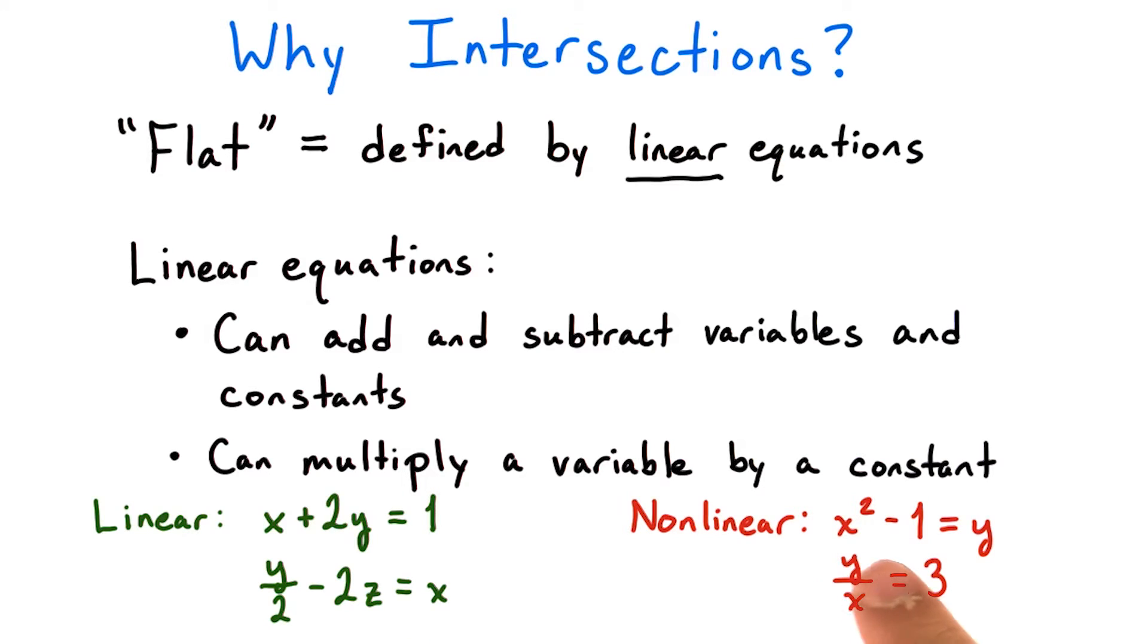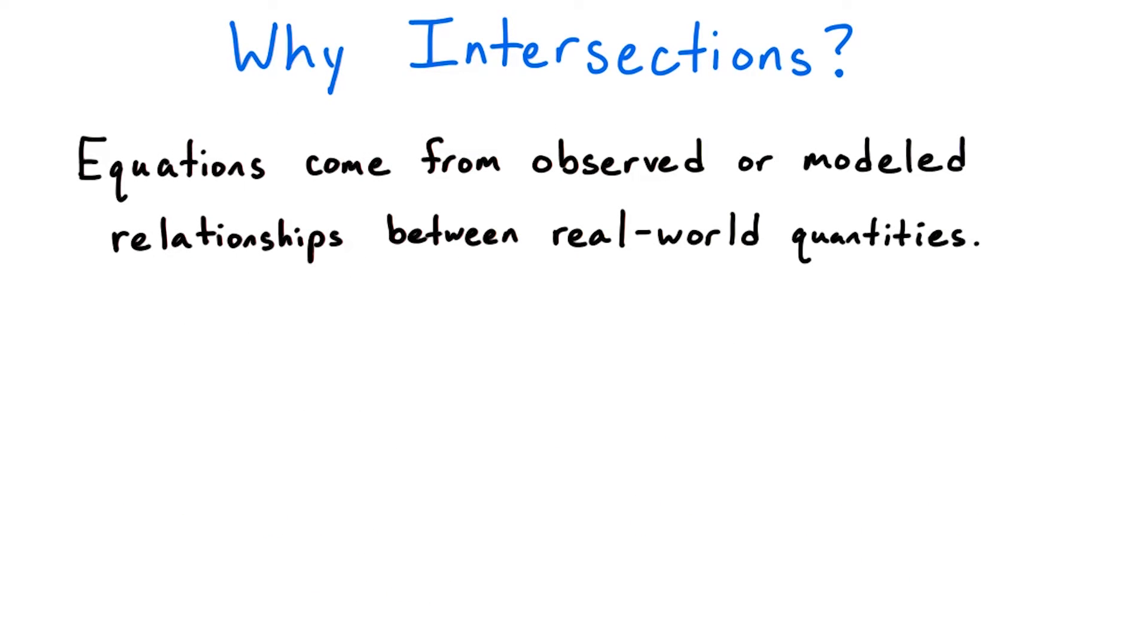But x² - 1 = y is not linear because x is being multiplied by x, and y/x = 3 is also not linear because a variable y is being divided by another variable x.